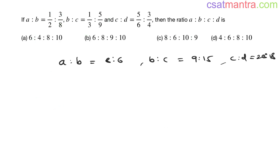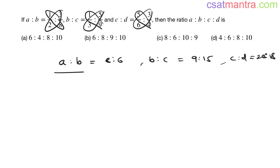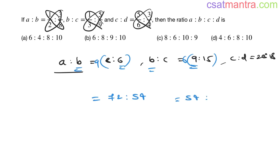Let's solve using the conventional method — it's a bit lengthy but helps understand the concept. a:b = 8:6, b:c = 9:15, c:d = 20:18. We have b in two ratios; let's make b equal. Multiply the first ratio by 9 and the second by 6: 9×8=72, 9×6=54, and 6×9=54, 6×15=90.